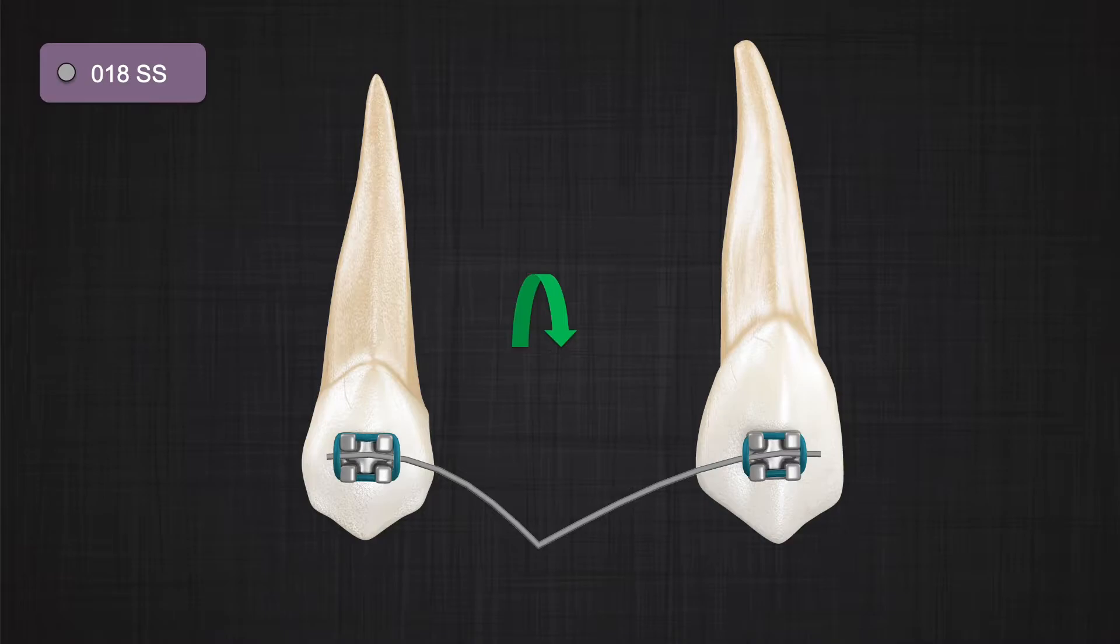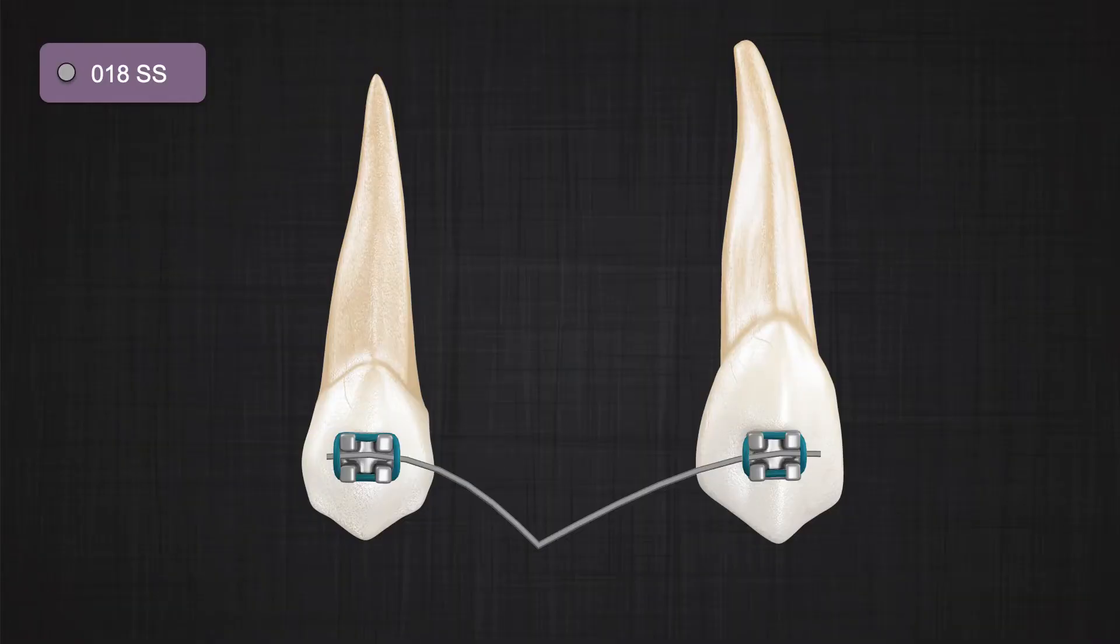Therefore, sectional round wire are not a good tool to introduce any first, second order or third order change in the angulation of the tooth. This is not correct if you are using a continuous arch wire. Under those conditions, because the round wire will not rotate, the forces that appear in the system are stable.